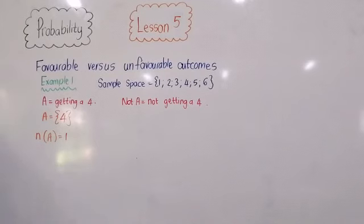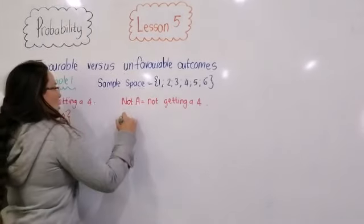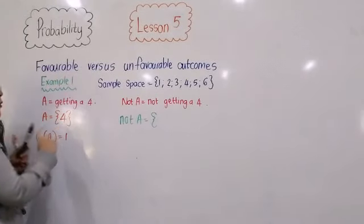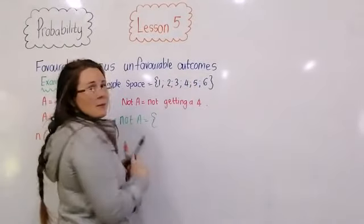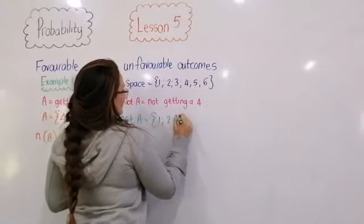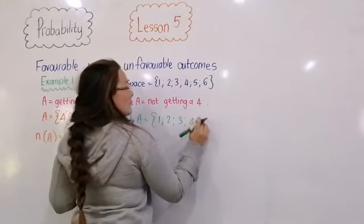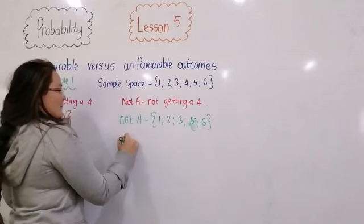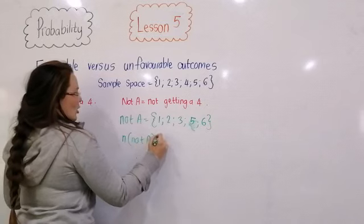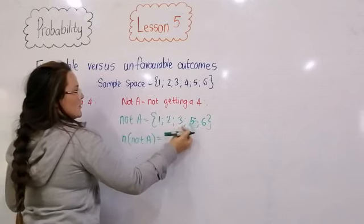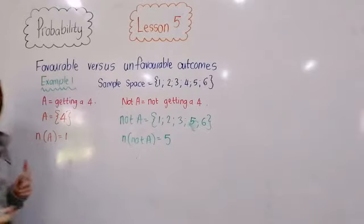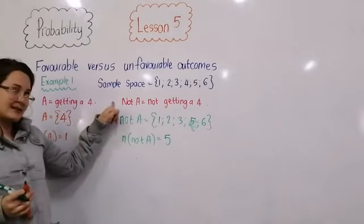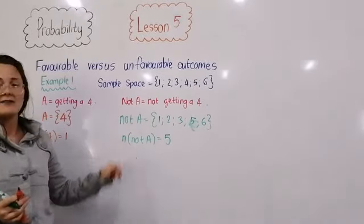Let's look at not-A. What is my sample space consisting of? Well, if A is four, not-A must be everything else except four — so it would be one, two, three, five, and six. The number in my not-A sample space is five outcomes. So, getting a four, I've got one favourable outcome, and not getting a four, I've got five favourable outcomes.